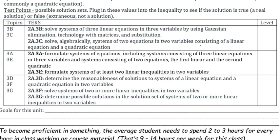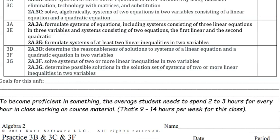After you've completed those three parts of the pre-assessments, record what level you are for each, and then come up with some specific goals for this unit — what do you want to achieve? Remember, to become proficient in something, the average student needs to spend 2-3 hours for every hour in class working on course material. That means 9-14 hours per week for this class outside of class.